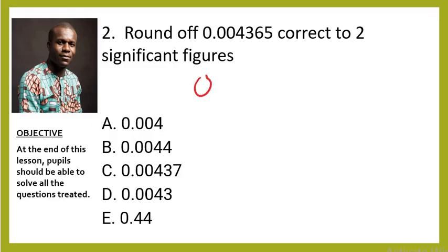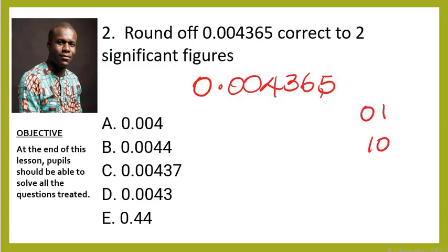Question two: round 0.004365 to two significant figures. You must know the difference between significant figures and decimal places. There is a big difference between 0.1 and 1.0. For 0.1, that zero is negligible — you neglect it. But if a non-zero digit starts a number, it gives the zero value. That is why the zero in 10 has value, but the zero in 0.1 does not.